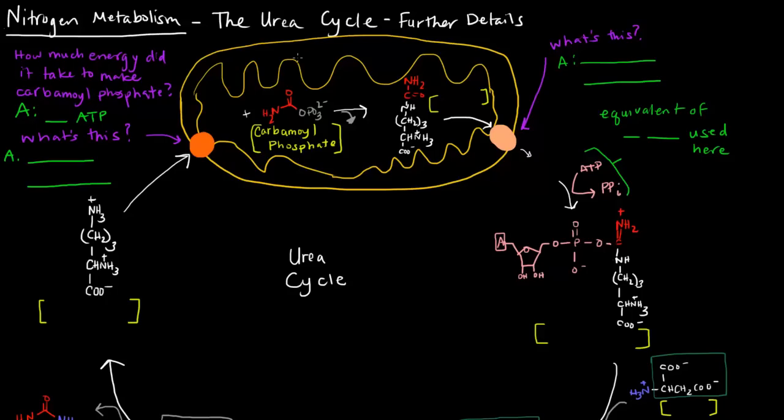In this video, I want to talk about the urea cycle in more detail. In the last video, we talked about how we created carbamoyl phosphate, which sort of started off this cycle. That cost us two ATPs to actually make that carbamoyl phosphate.